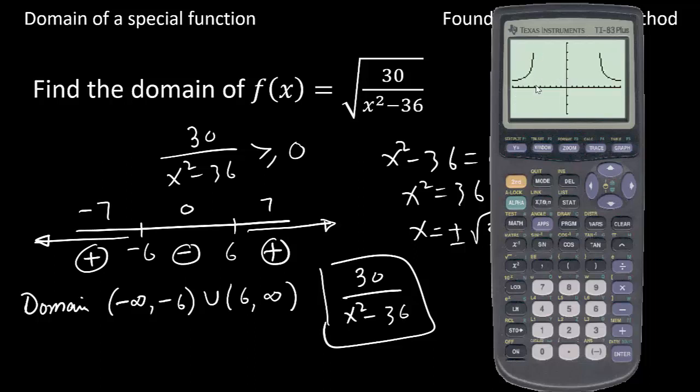So you can see here is negative 6 and you have the graph on this side, and starting from here, 6, goes all the way to positive side. So this is the domain. We'll take another example.